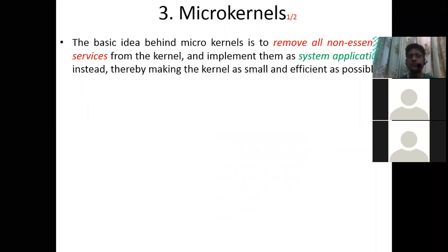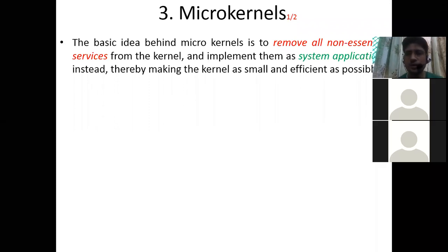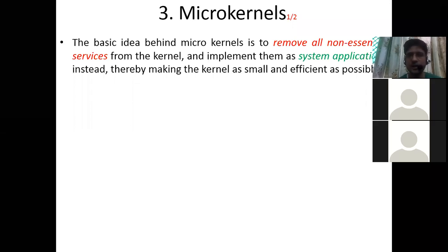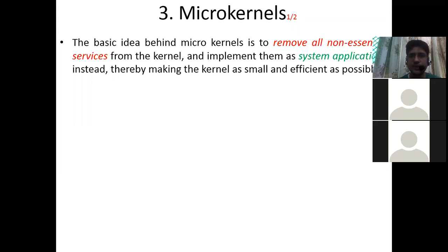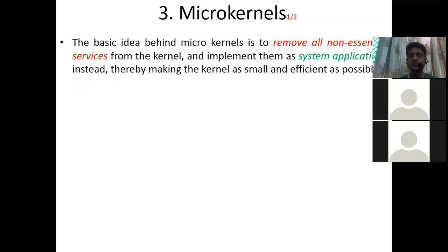Then we go to the layered approach, where there is a hierarchy and each layer has specific purpose, functionality, and power to solve end-user problems. The drawback of the layered operating system is that it is less efficient because each layer may involve significant processing. In the layered OS diagram, layer N is the user interface and layer zero is the hardware. In the microkernel, the basic idea is to remove all non-essential services from the kernel and implement them as system applications, with the microkernel providing only essential services.